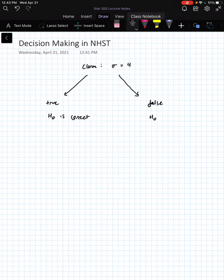If it's true, that means that the null hypothesis is correct. And if it's false, that means the null hypothesis is not correct. Everything that we do in null hypothesis significance testing comes from the null hypothesis, not the alternative.